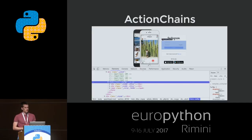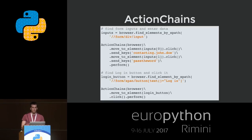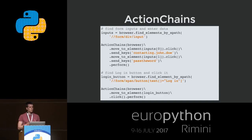We first have to check the page source for our elements, and we'll also introduce a new concept called Action Chains — it does what it's named after, it simply chains actions together. In this case we look for the form elements and the login button. Using our browser element to find stuff by XPath, the input is just //form/div/input. We then instantiate a new Action Chain element passing the browser, and we have access to methods: move to element, click, send keys, and perform — which triggers the whole Action Chain to execute.